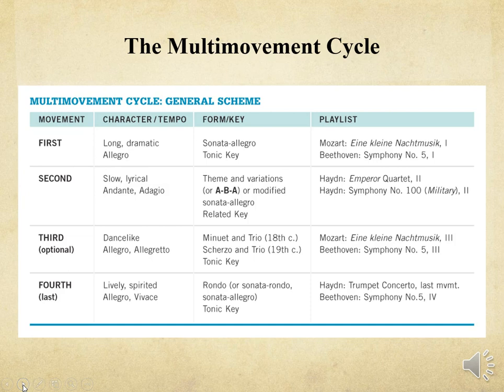The second movement is slow and lyrical, with a tempo of andante or adagio. The form would most likely be theme and variations, ABA, or a modified sonata allegro, and it would be in a related key. The third movement is dance-like, with tempos of allegro or allegretto — most likely a minuet and trio in the 18th century, and a scherzo and trio in the 19th century, in the tonic key. The fourth and last movement is lively and spirited, with a tempo of allegro or vivace, and would most likely be a rondo, sonata rondo, or sonata allegro in the tonic key.